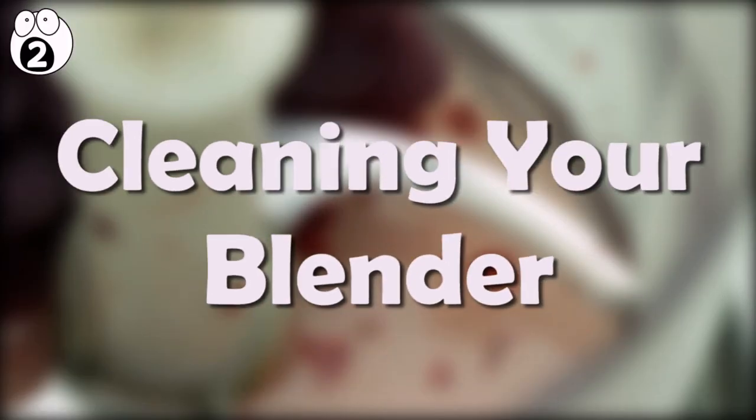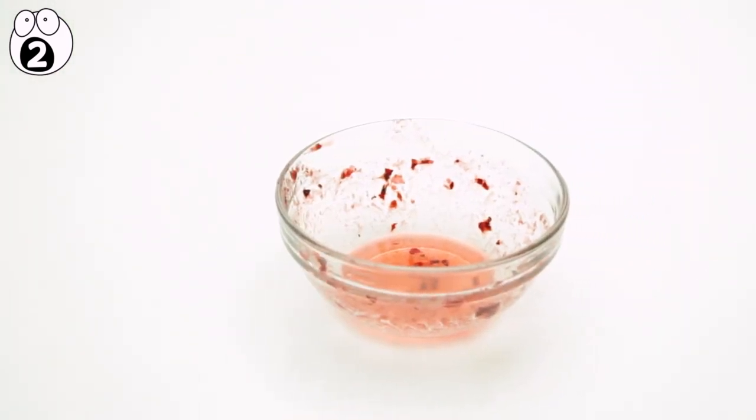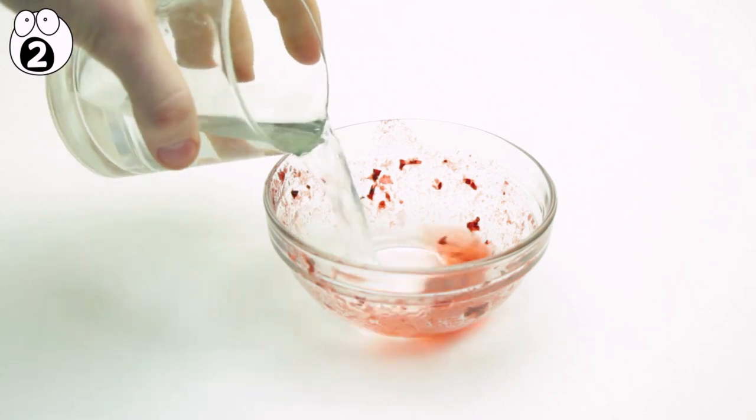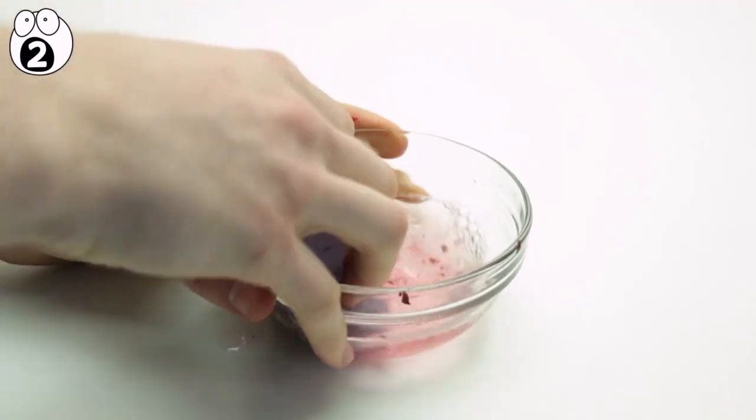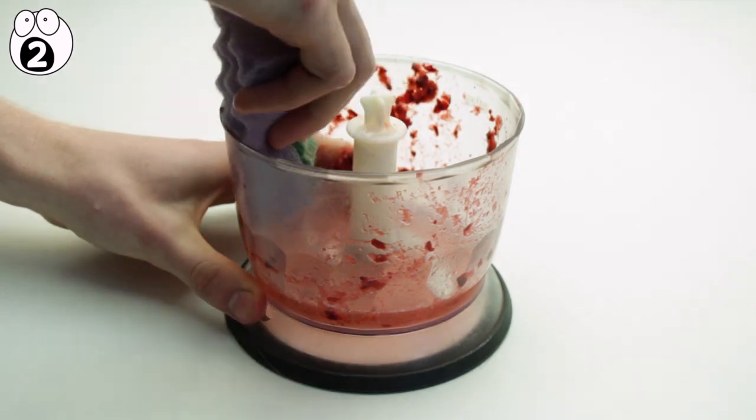Number 2, cleaning your blender. Almost every common kitchen tool can be cleaned using the same method: wetting it, applying soap, scrubbing it with a sponge, and rinsing it off. Though simple, this method should not be used when it comes to blenders.